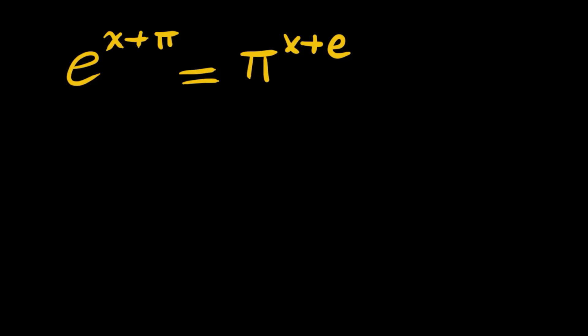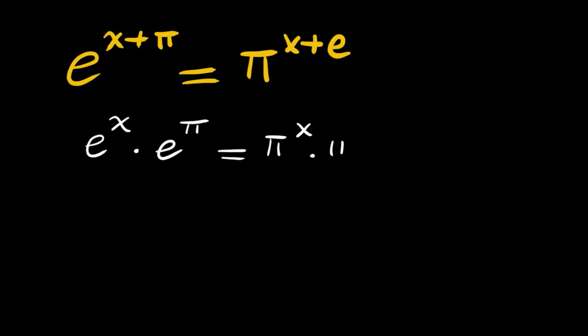Hello dear friends, welcome to my channel. We have an exponential today: e to the x plus pi is equal to pi to the x plus e. We will begin by writing the left hand side as e to the x times e to the pi, and the right hand side as pi to the x times pi to the e.